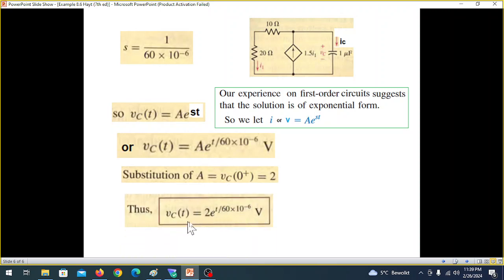we get the final value VC(t) is 2e raised to the power t over 60 into 10 to the power minus 6. So this is the same answer that we got in method 1.